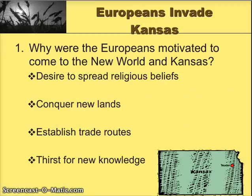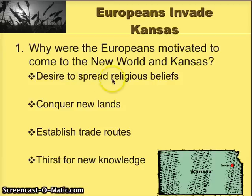This takes us into why did Europeans invade Kansas. The motivations for Europeans to come into the New World and Kansas were: first, to spread their religious beliefs; second, to conquer new lands; third, to establish trade routes, as you're going to see with the second two explorers; and last, a thirst for new knowledge. The Spanish played a role in the first two ideas, and later on, the French came in with the establishment of trade routes.